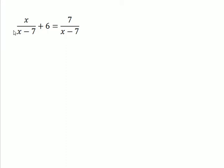Rational expressions — equations with rational expressions, video number two. Let's look at this equation: x over x minus seven, plus six, is equal to seven over x minus seven. The first thing we need to do is figure out what our least common denominator is going to be.